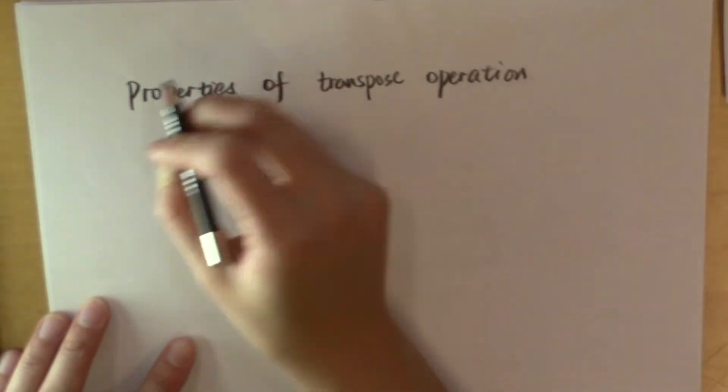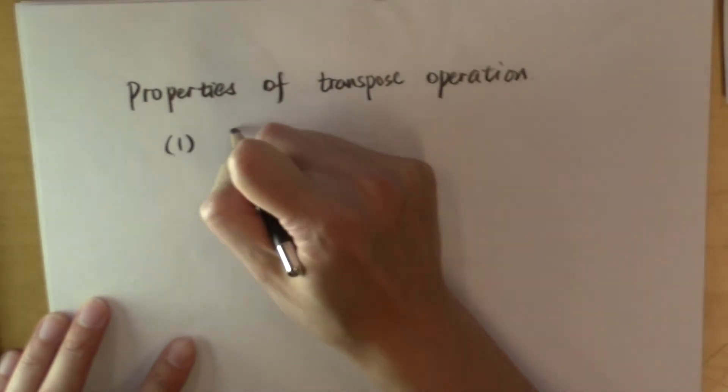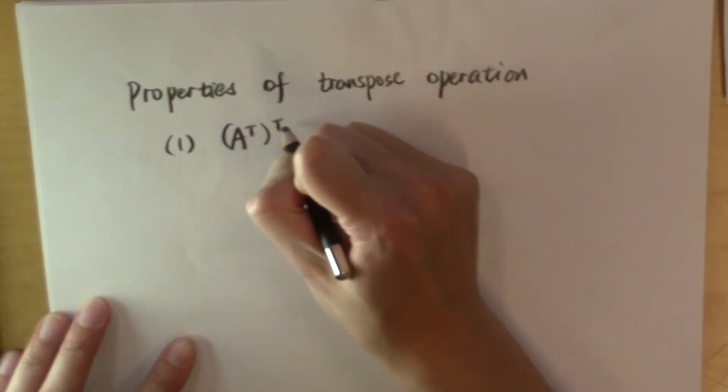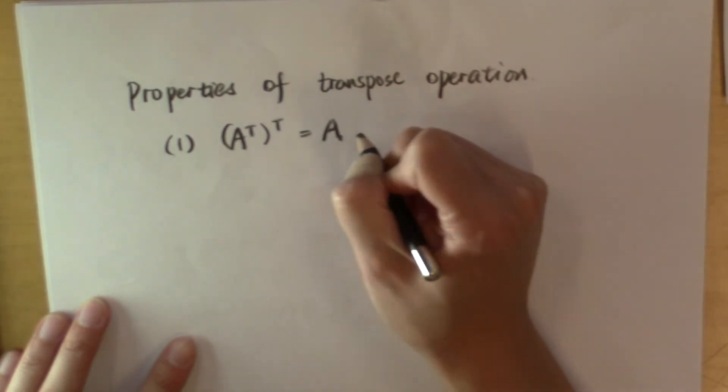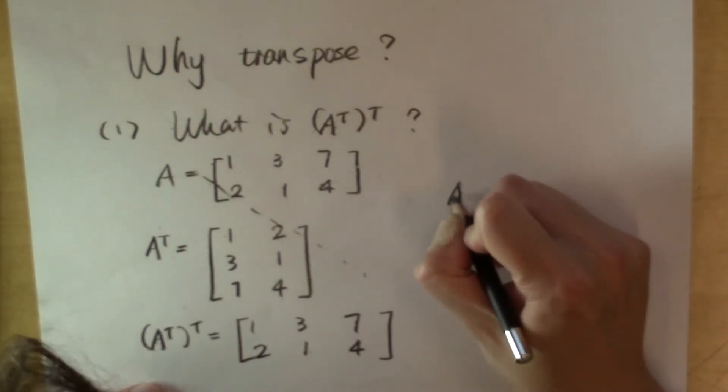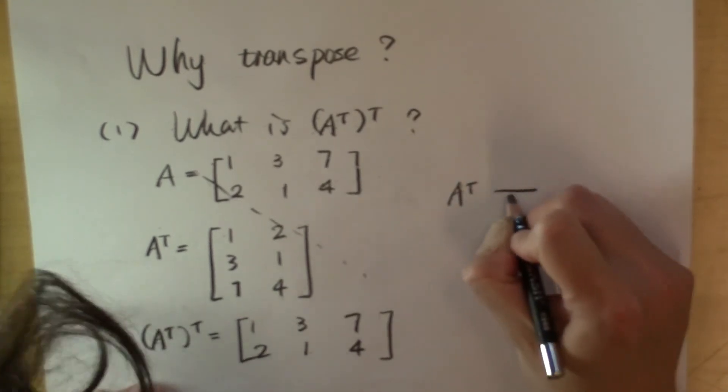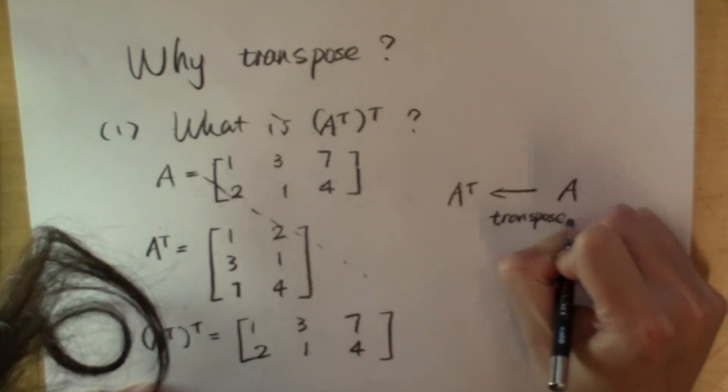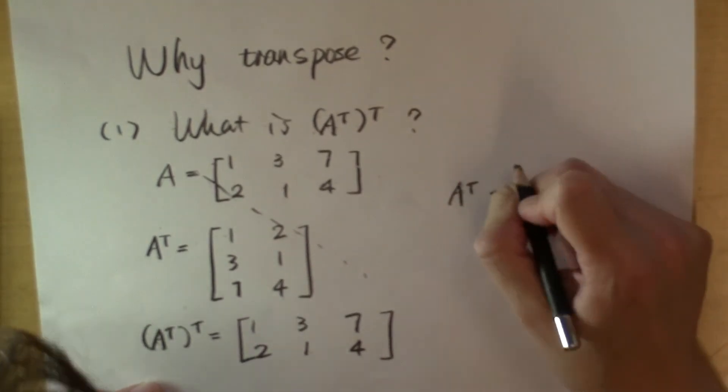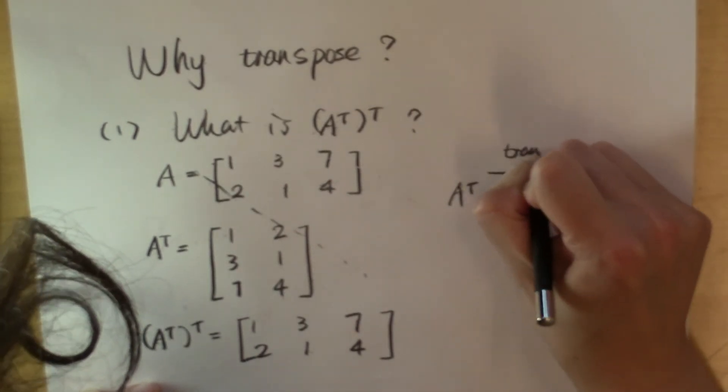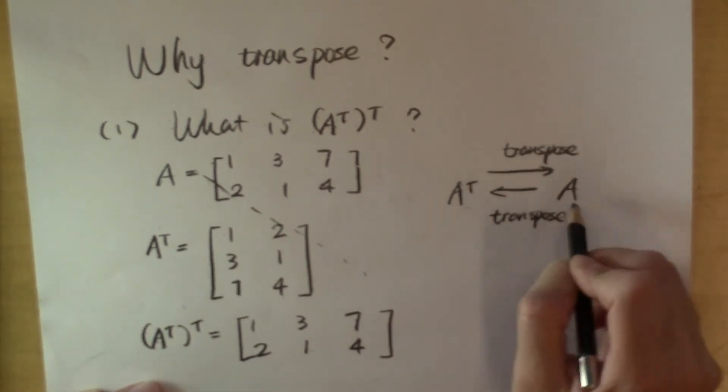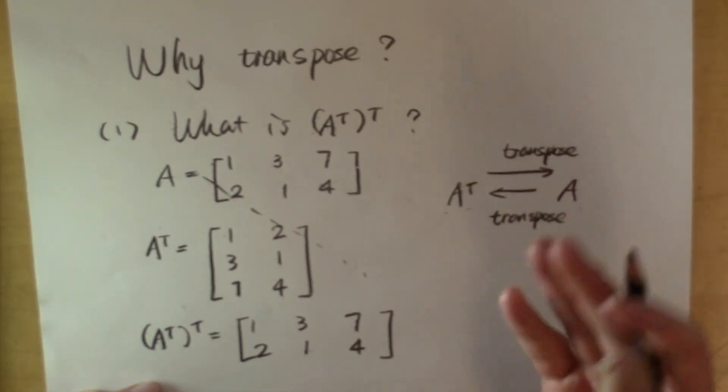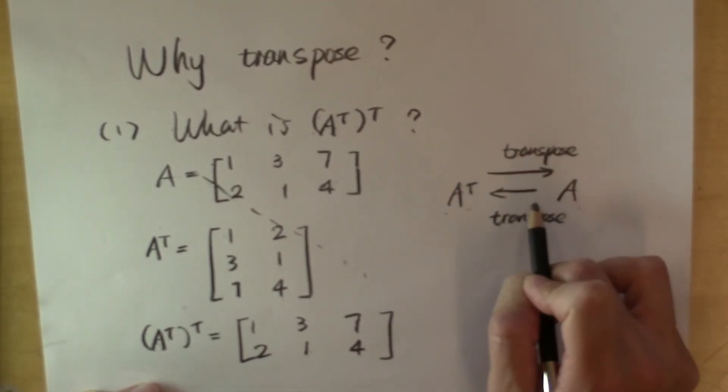So here's the first property of the transpose operation. The transpose of A transpose is the matrix A itself. Think about what this means. The transpose of A is A transpose. And this says the transpose of A transpose is A. So these two matrices are paired up by this operation called transpose.